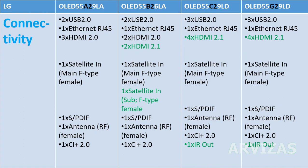Connectivity: A and B models and the C model have 2 USB ports, while G has 3 USB ports with USB 2.0. The A model has 3 HDMI ports with 2.0. B model has 2 ports with HDMI 2.0 and 2 ports with HDMI 2.1. C2 and G2 models have 4 HDMI ports with HDMI 2.1.